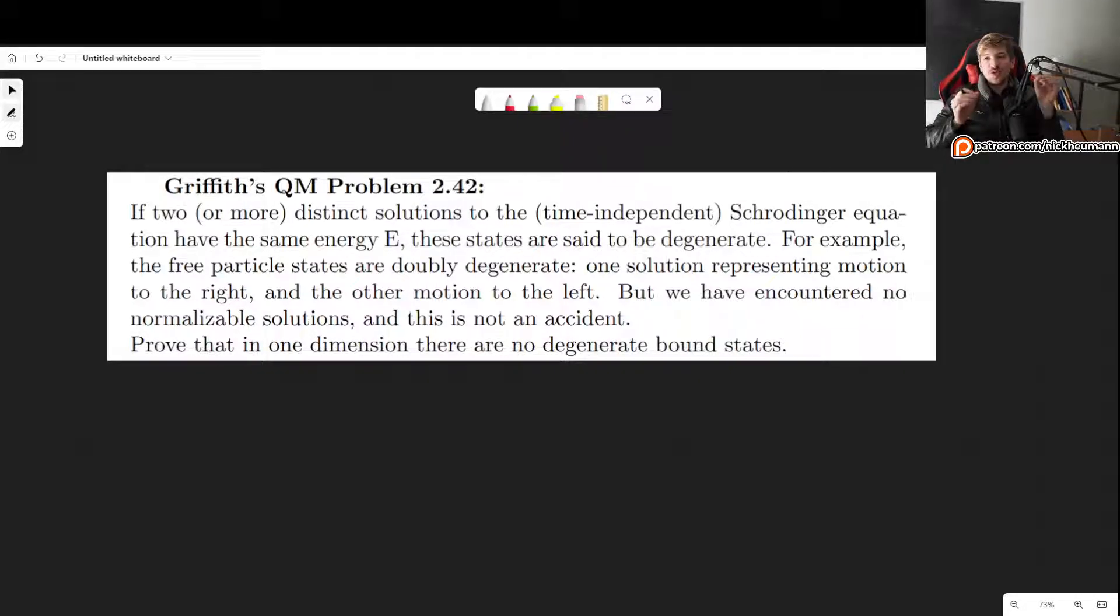Welcome! In this video I'll show you how to solve problem 2.42 as it appears in the third edition of Griffith's Introduction to Quantum Mechanics. This problem asks us the following: If two or more distinct solutions to the time-independent Schrödinger equation have the same energy E, these states are said to be degenerate. So this is our first real approach into the concept of degenerate states.